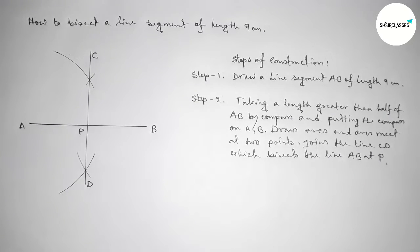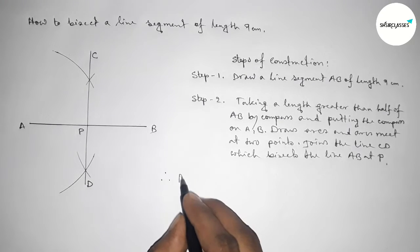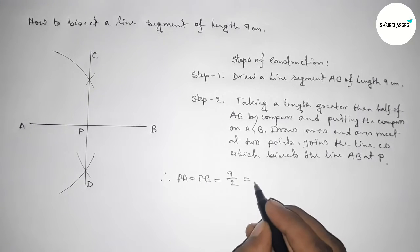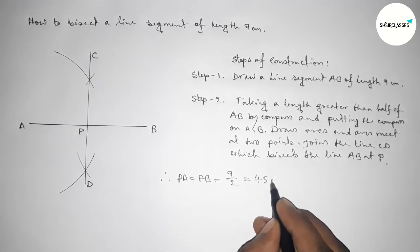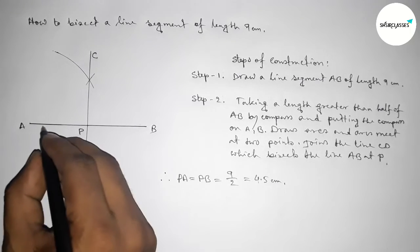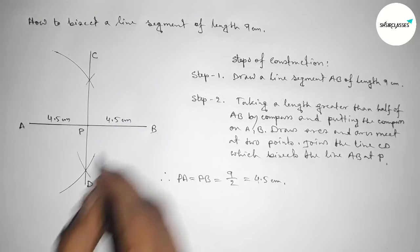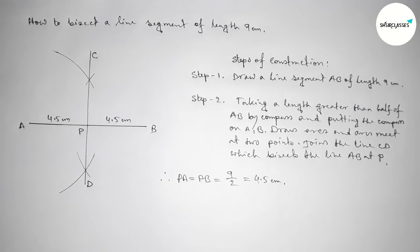Okay, so therefore the lengths PA and PB are equal. PA equals PB equals 9 by 2, so this is obviously 4.5 centimeters. This length is 4.5, this length is 4.5 centimeters. Now I am going to check this.